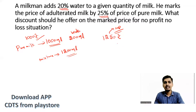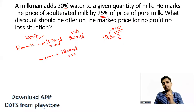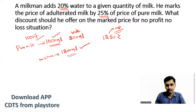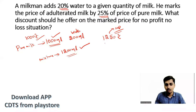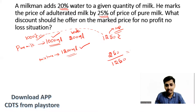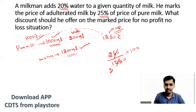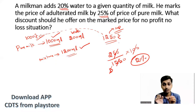For no profit or no loss, he must sell for 1000 rupees (the cost price). So he must give a discount of 1250 − 1000 = 250 rupees from the market price of 1250. Discount percentage = 250/1250 × 100 = 20%. So he should offer a 20% discount on the market price to break even.